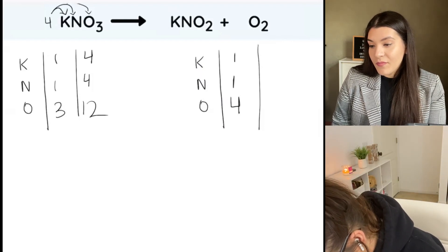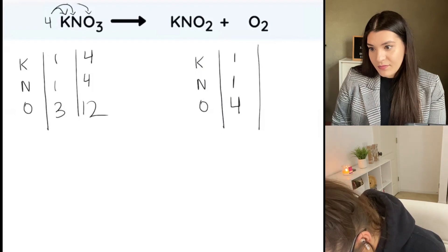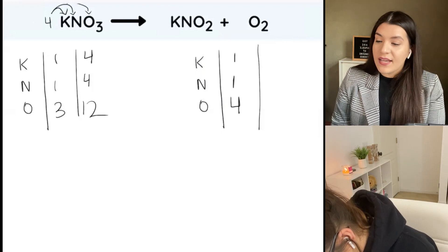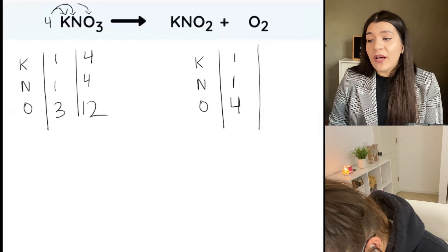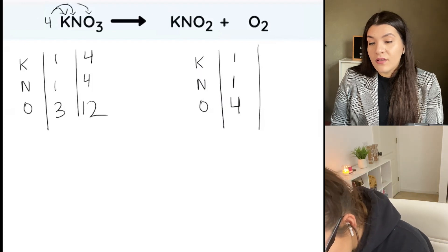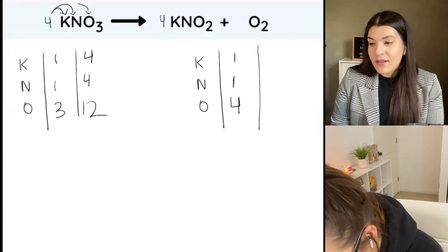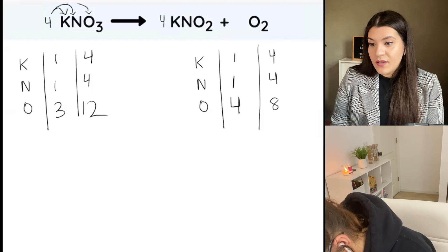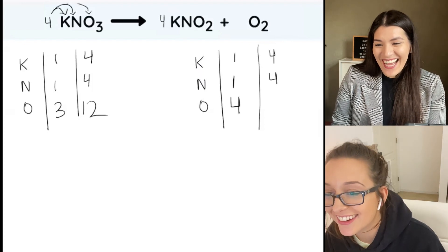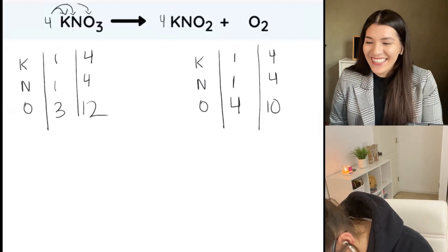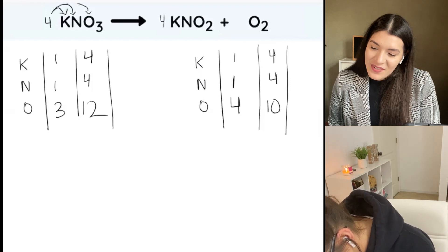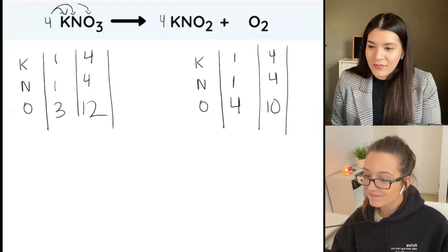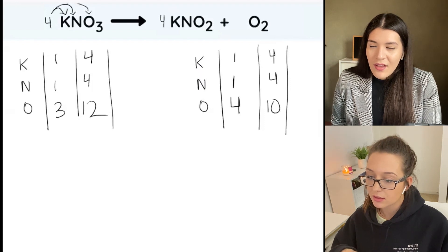So we're gonna need to multiply over here by four on the right side — we're balancing out potassium right now. So this is four, this is four, this is four, this is... eight plus two is ten. Okay, here we are again. So we're balancing. And then in my head... yes that works. This is a good one.